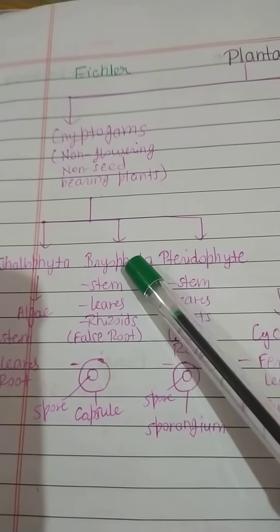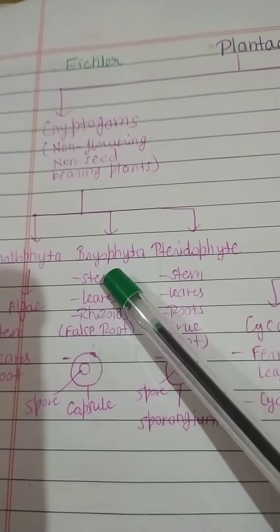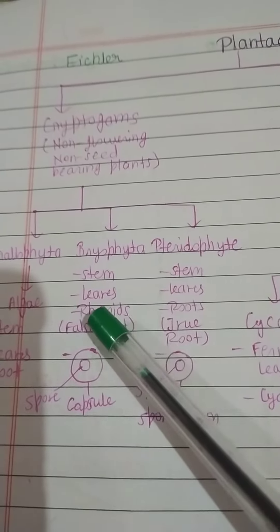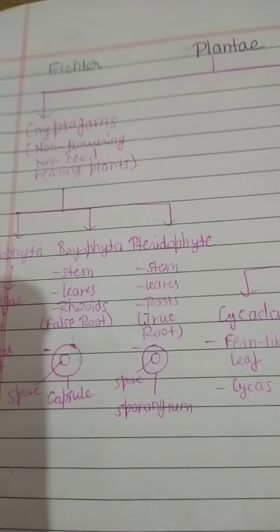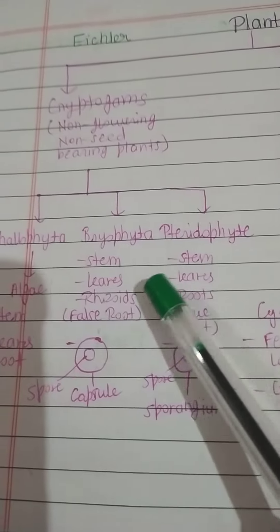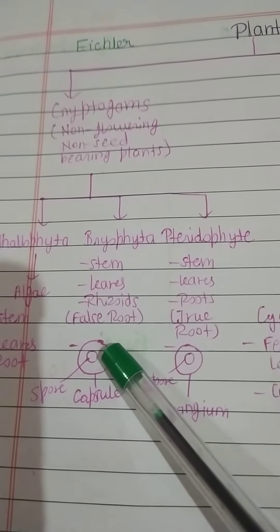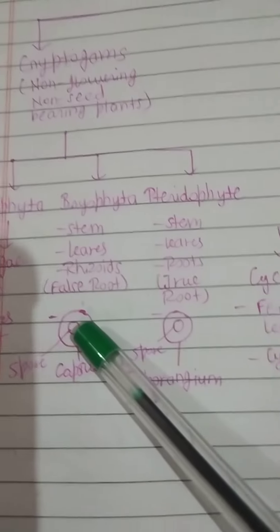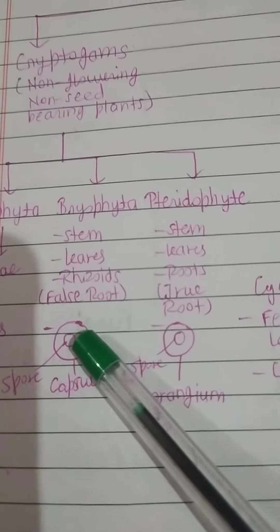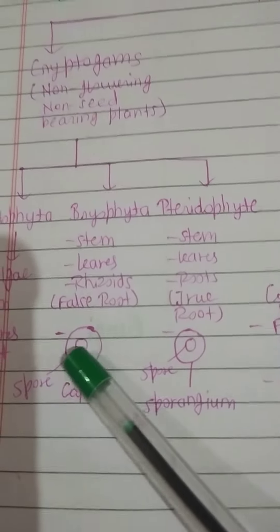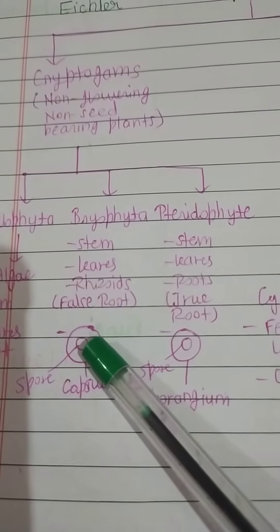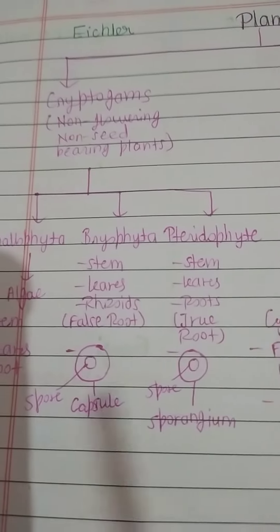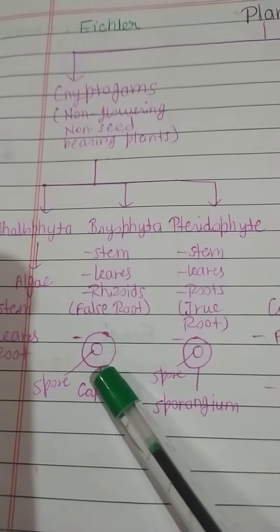Bryophyta consists of stem, leaves, and rhizoid. Rhizoid is known as false root, and they consist of sexual spores which are the spores present within the capsule.